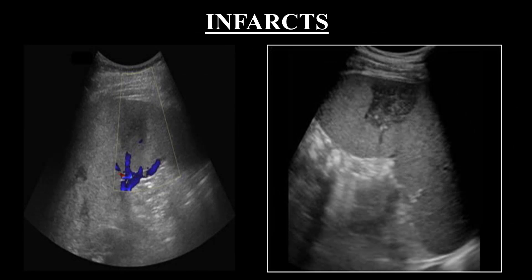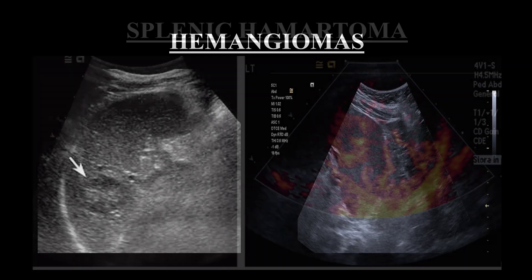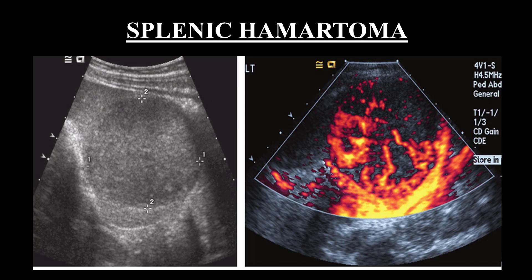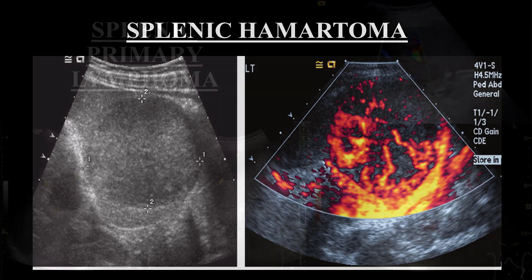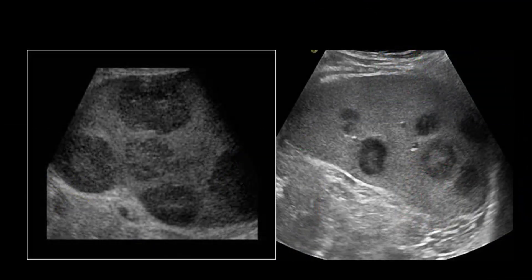Infarctions are caused by septic emboli or thrombosis in patients with bacterial endocarditis, hemolytic anemia, arthritis, pancreatic carcinoma, leukemia, and polycythemia. Fresh infarcts are well-defined hypoechoic wedge-shaped lesions. Splenic hemangiomas are rare unlike in the liver; typical hyperechoic masses may have variable features and spleen size is usually normal. Splenic hamartomas are benign primary neoplasms of the spleen with mixed echogenicity and hypervascularity. Lymphomas of the spleen could be diffuse or focal, single or multiple, hypoechoic or hyperechoic masses, and may be associated with splenic hilar lymphadenopathy.